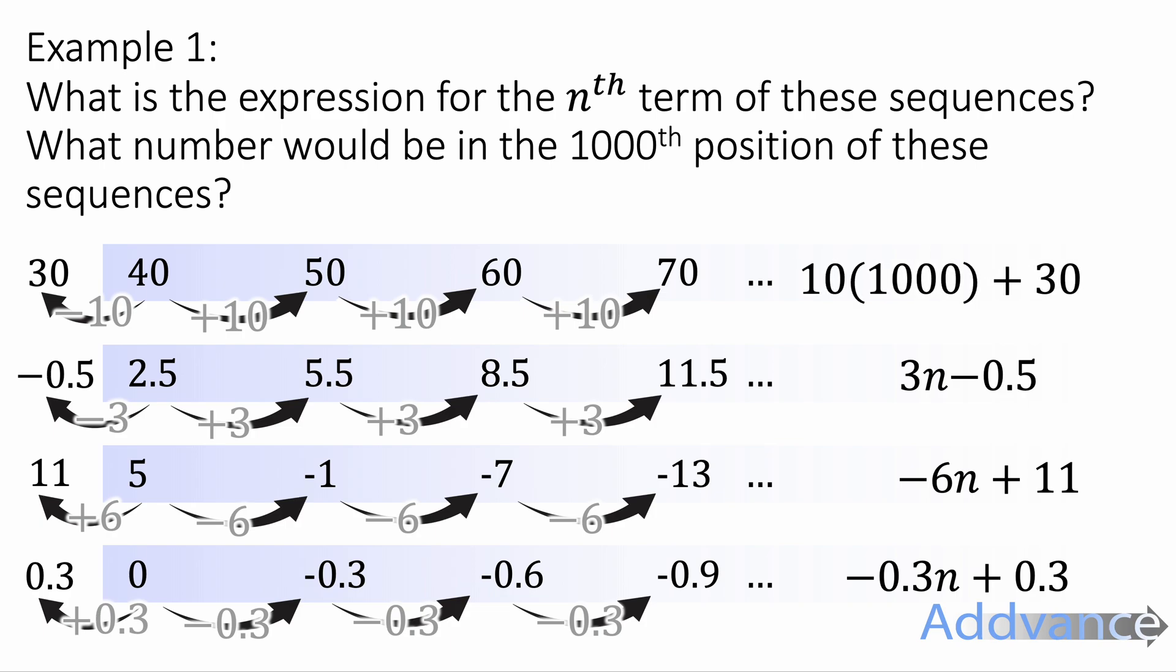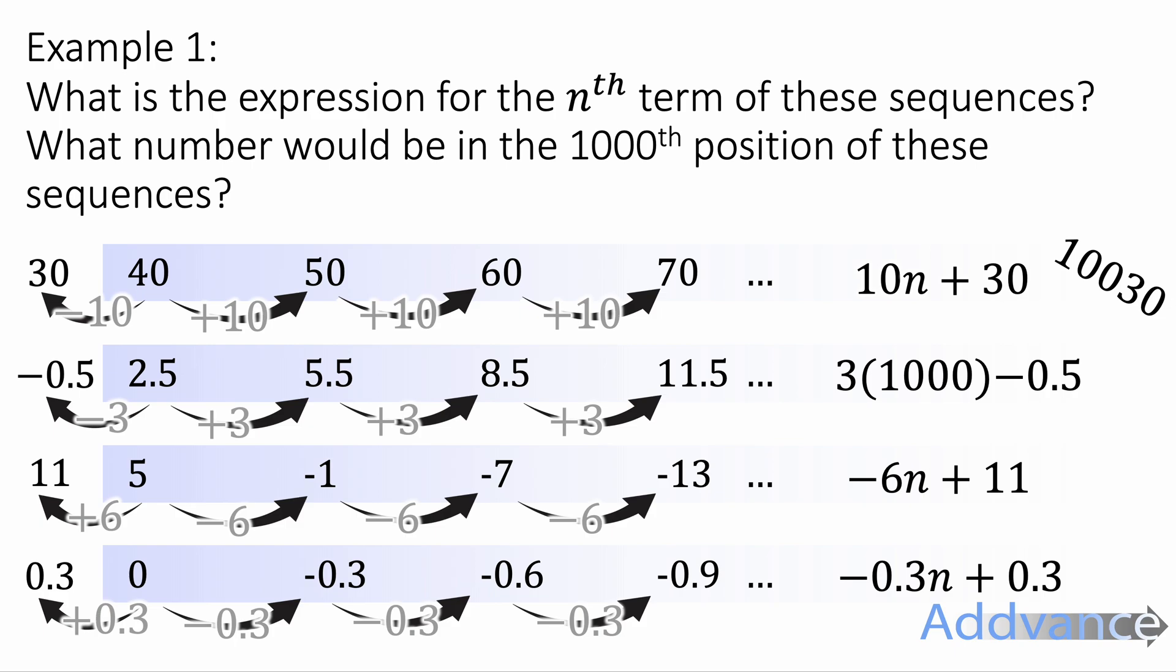Now we're going to find the thousandth position by substituting n equals 1000 into our expressions. So 10n plus 30, 10 times 1000 plus 30 is 10,030. Substituting 1000 into this one, 3 times 1000 minus 0.5, you would get 2999.5. -6 times 1000 plus 11, you get -5989. And then -0.3 times 1000 plus 0.3 will be -299.7 as the final answer. And so we've found the thousandth term of these sequences by just using the nth term and substituting n equals 1000 into it.